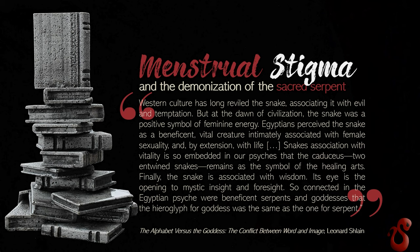Western culture has long associated the snake with evil and temptation, but at the dawn of civilization the snake was a positive symbol of feminine energy. Egyptians perceived the snake as a beneficent, vital creature intimately associated with female sexuality and, by extension, with life. A snake's sinuous mode of locomotion is evocative of a woman's walk and dance, and her movements in lovemaking are serpentine. In some cultures, orgasm has been likened to the release of the latent energy of a coiled snake. Snakes also resemble three important life-affirming images: the meander of rivers, the roots of trees and plants, and the umbilical cord of mammals.